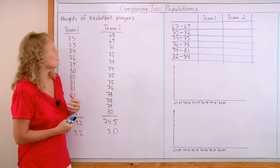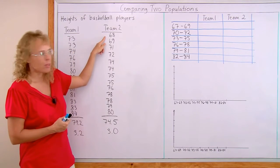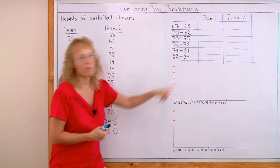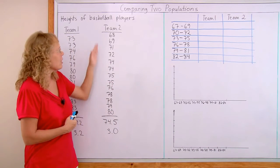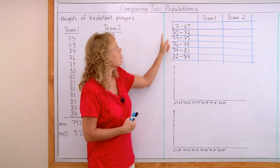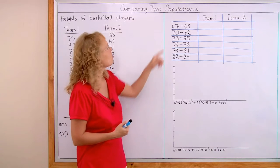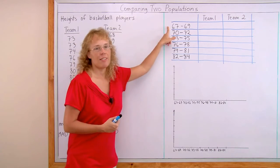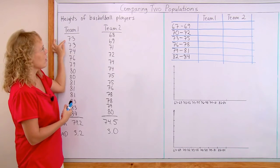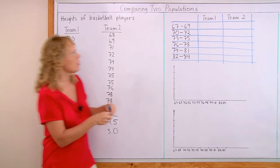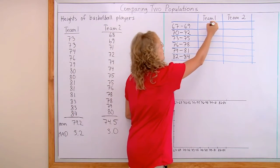We cannot just draw a bar for each number, like 68 here and a bar up, 69 here and a bar up. No. We want to categorize these, and I made these kind of bins. And now we just count how many are between 67 and 69 in team 1. Okay, that's zero. And then zero also for the next one.